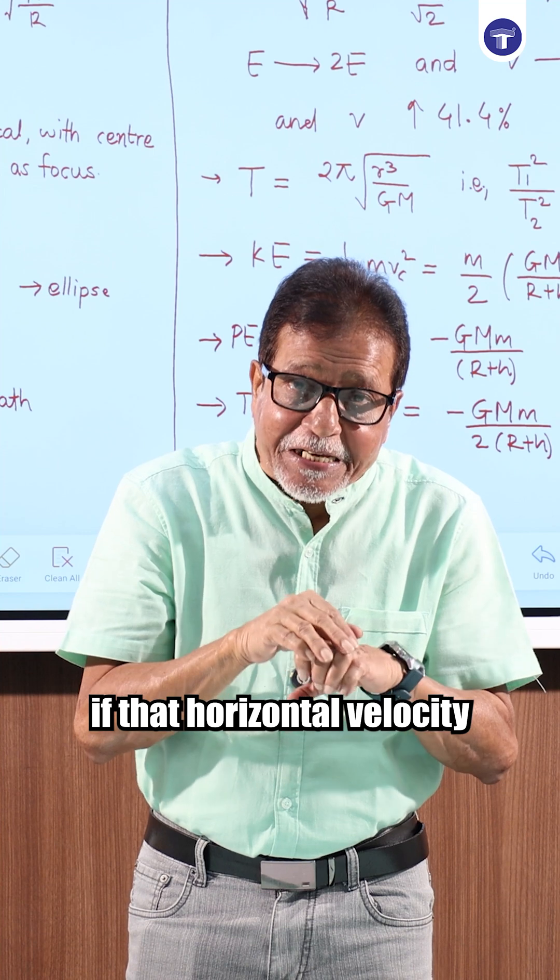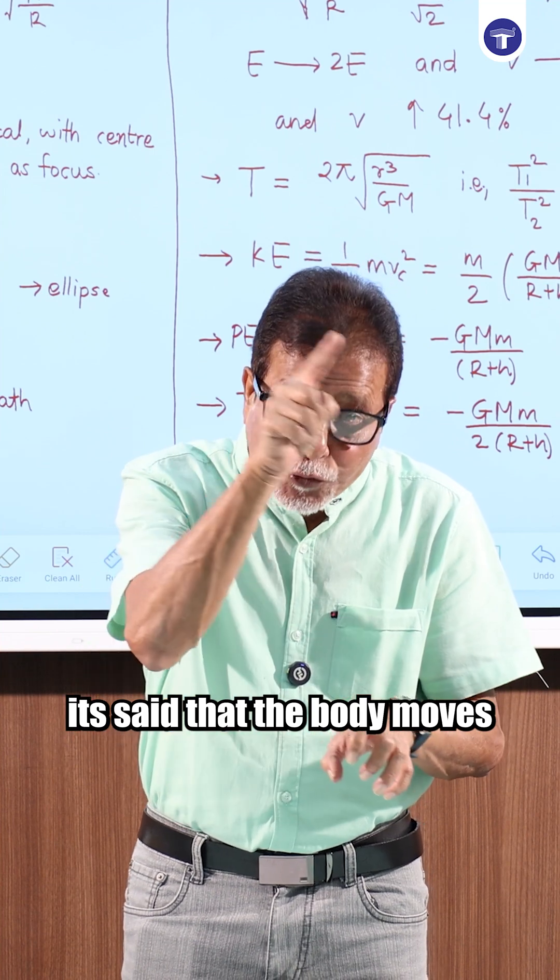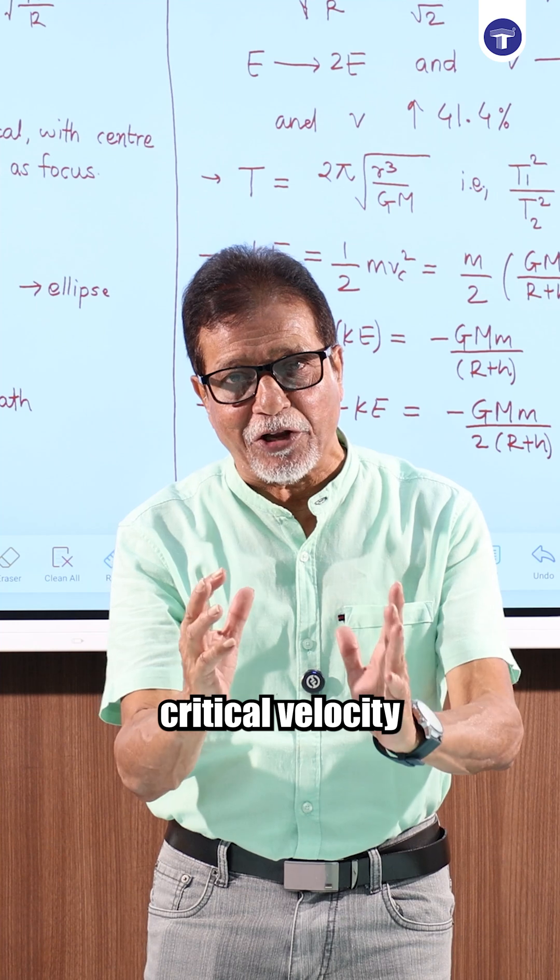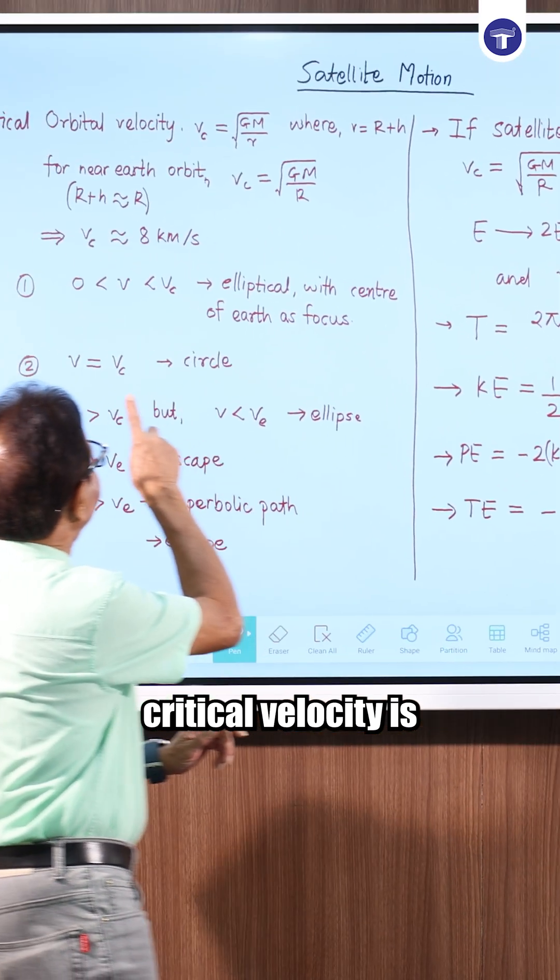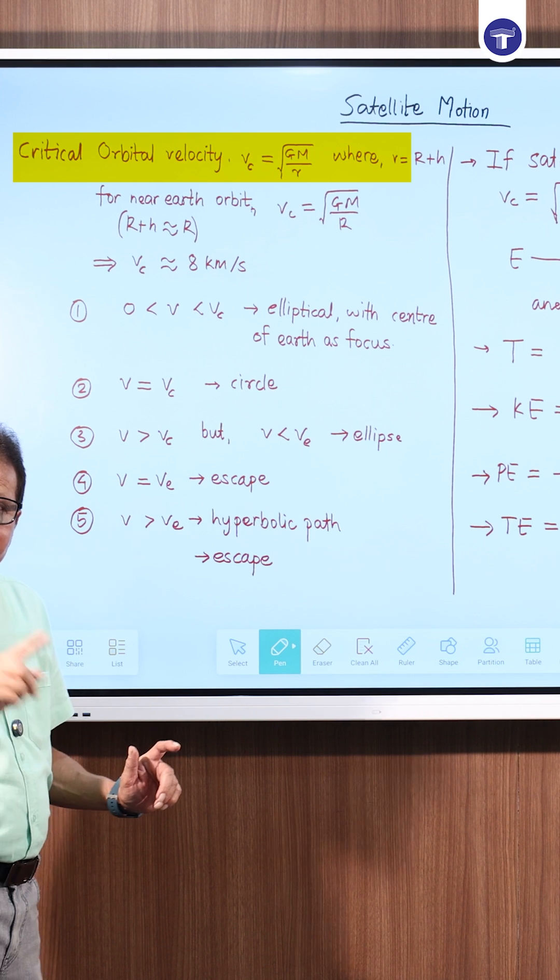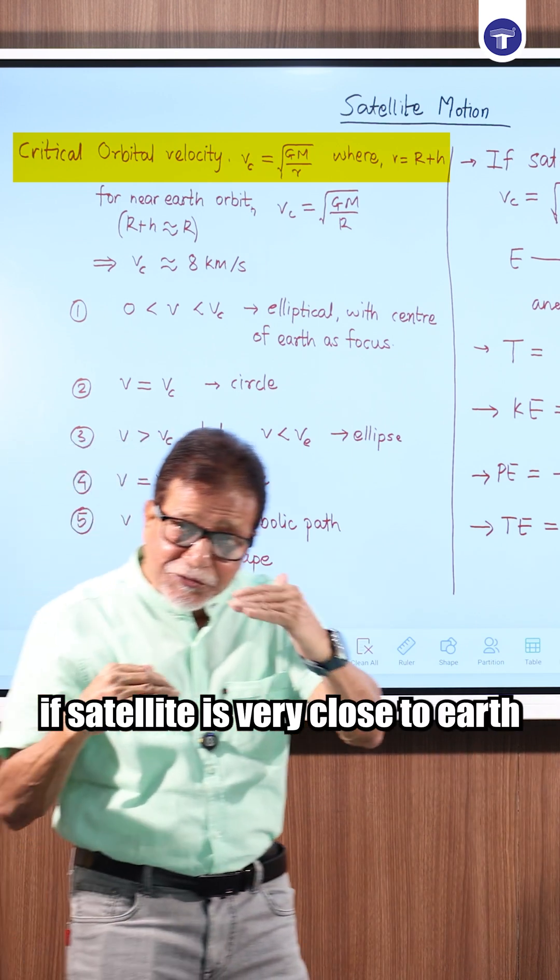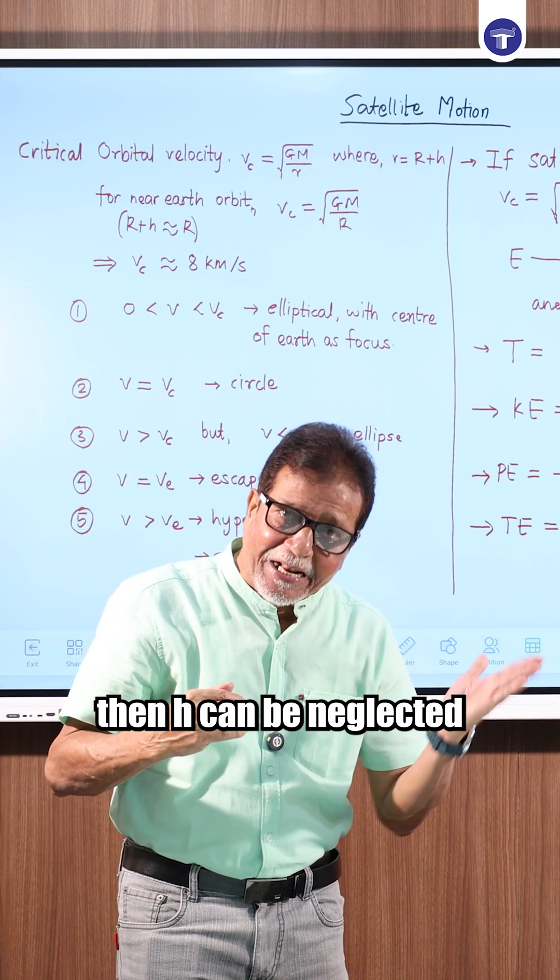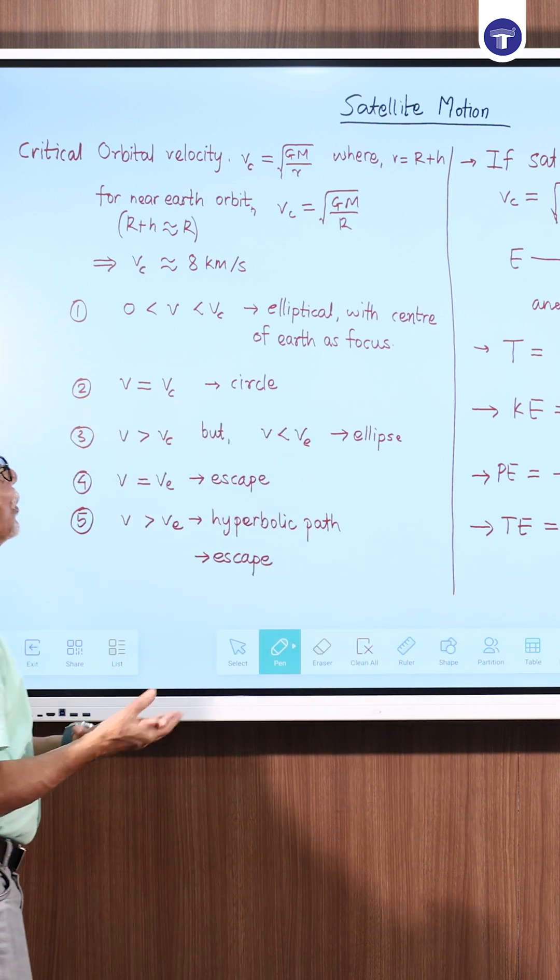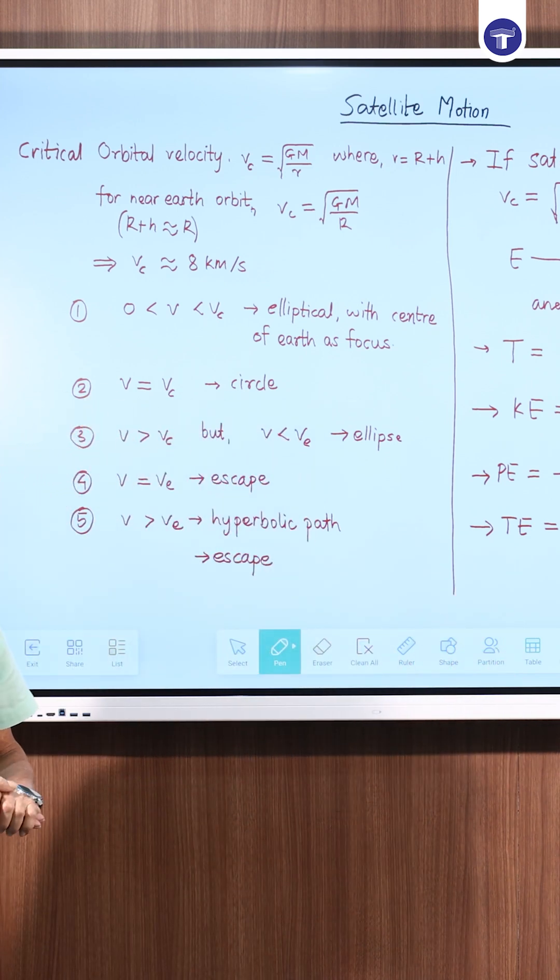If that horizontal velocity is such that the satellite moves in a stable circular orbit, then that velocity is called critical velocity. The formula for critical velocity is vc = √(GM/r), where r is R + h. If the satellite is very close to earth, then h can be neglected compared to R. Then the formula becomes vc = √(GM/R), that is about 8 km per second.